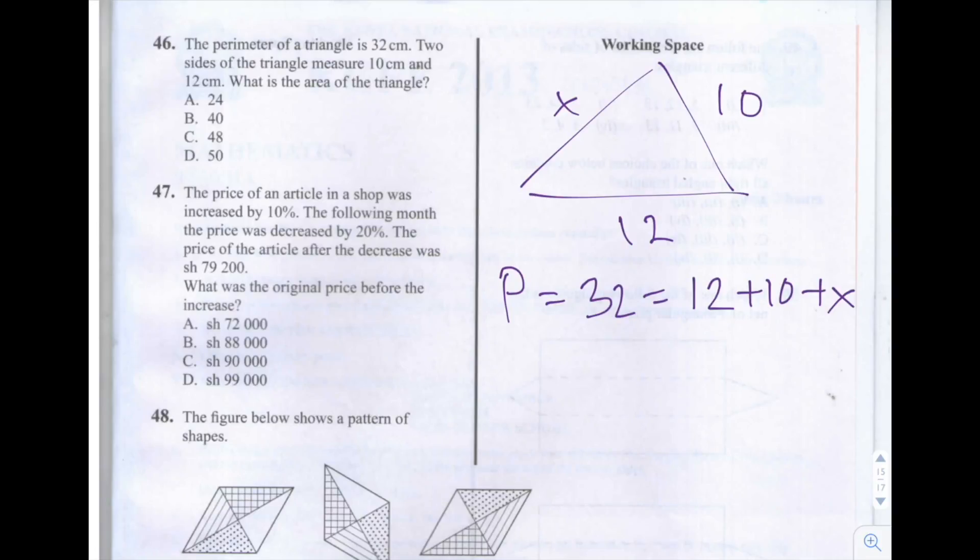This is question number 46 of the 2013 KCPE math paper. The perimeter of a triangle is 32 centimeters. Two sides of the triangle measure 10 centimeters and 12 centimeters. What is the area of the triangle?